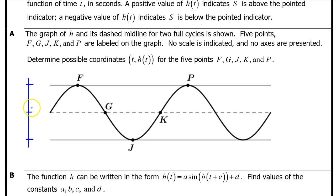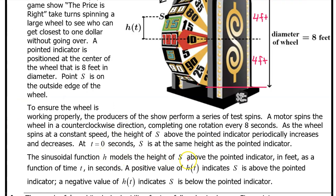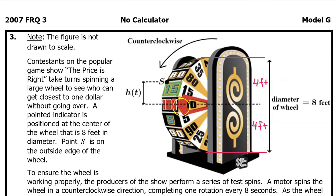Let's begin by finding these three values on the vertical axis: the maximum, the minimum, and the midline. H models the height of S above the pointed indicator. This red thing is the pointed indicator. The wheel has a diameter of eight. So S will periodically go four feet above the midline and fall four feet below the midline. So the midline is going to be zero in this case, and we will have a maximum height of four and a minimum height of negative four.